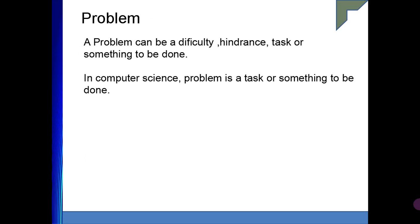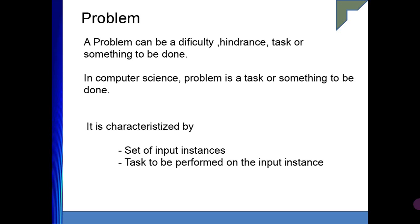What do you understand by a problem? A problem is nothing but a difficulty, a hindrance, a task, or something that needs to be done. In computer science, a problem is considered as a task or something that needs to be done. It is categorized by the set of input instances and the task to be performed on them. For example, you need to add two numbers — the task is to add the two numbers, and the inputs are the two numbers.